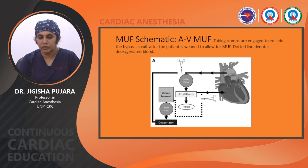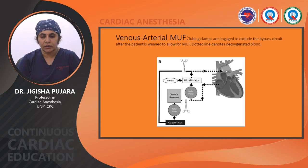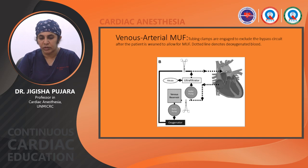In both AV and VA MUF systems, isolated from the CPB circuit, blood volume can be independently transfused from the CPB circuit to maintain satisfactory hemodynamics after weaning. In AV-MUF, the tubing clamp is engaged to exclude the bypass circuit after the patient is weaned; from the cardioplegia cannula, blood passes through the roller pump, ultrafiltration, and then back to the venous side. In VA-MUF, two clamps exclude the circuit; venous blood goes to the roller pump, then to the ultrafiltrator, with the retained volume returning to the aorta via the CPB line.